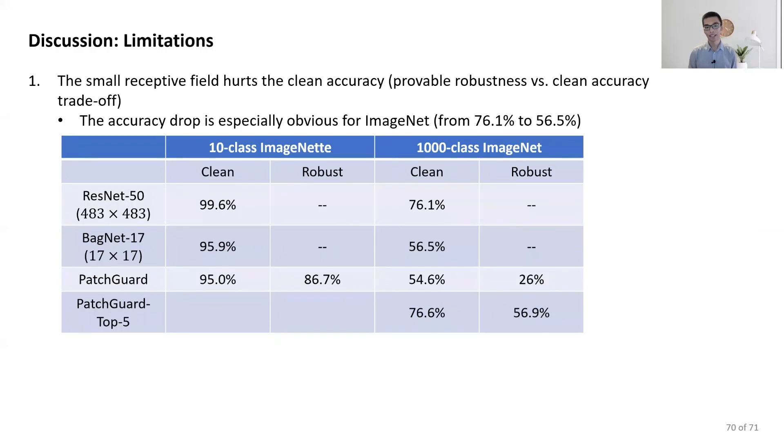The limitations: the biggest limitation is that we need to use small receptive field, and it hurts the clean accuracy. There is a trade-off between robustness and accuracy. How can we mitigate this trade-off is an interesting future work. The second limitation is that the masking operation requires additional parameters. How can we get rid of that?